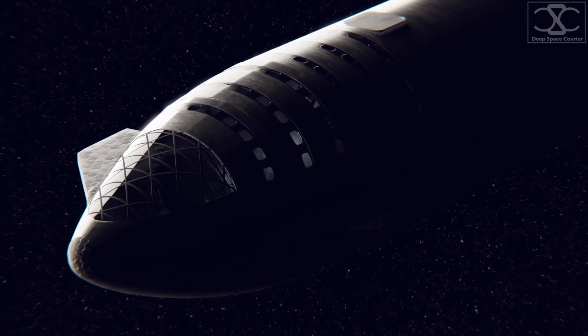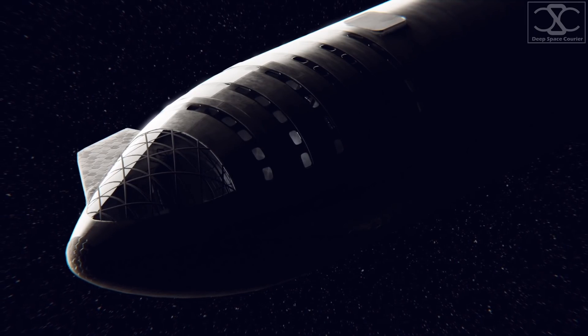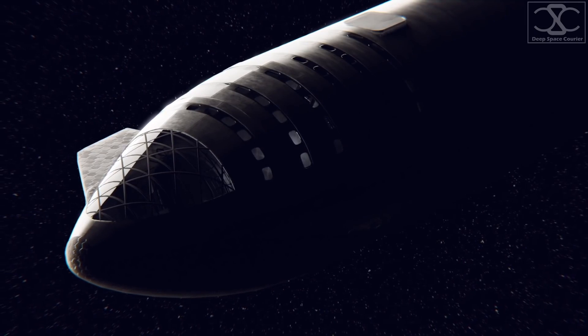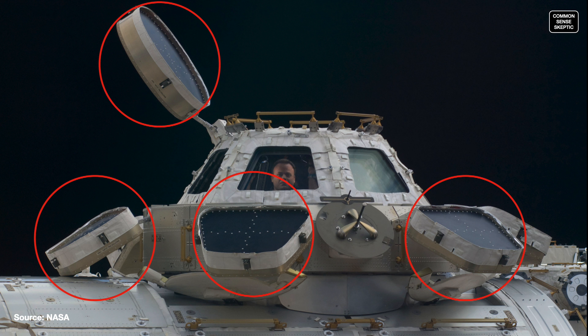Not only would it be incredibly heavy and terribly expensive, the thermal concerns about such windows would be overwhelming. Additionally, they would be a safety concern due to micrometeoroids, which is why the two-ton cupola on the ISS, currently housing the largest window in space, has heavy-duty protective shutters to protect the four layers of glass, if needed, or if the glass is broken and the hatch needs to be permanently sealed.